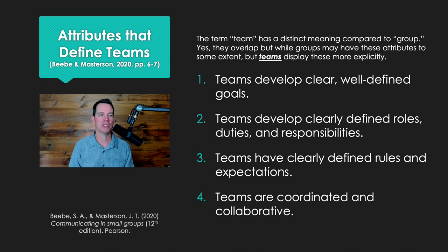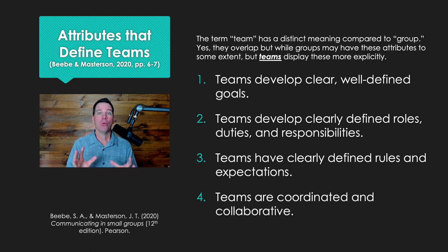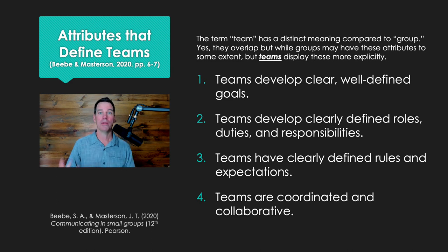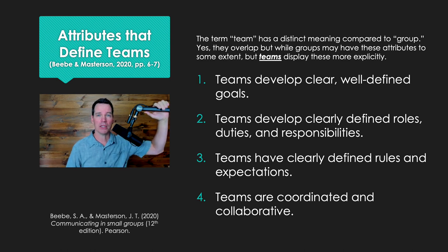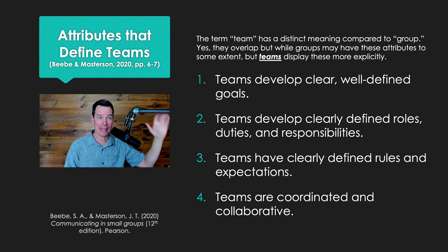There are four parts to this definition. First of all, teams develop clear, well-defined goals. They really know what they're there to do together. For example, a sports team knows what their purpose is when they show up — they have a very clearly defined goal. A group may just be social, just hanging out, not trying to accomplish anything in particular.